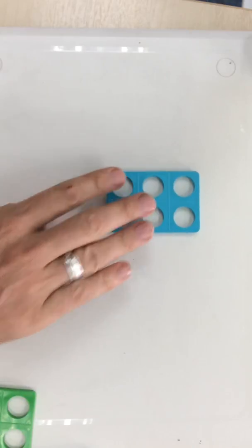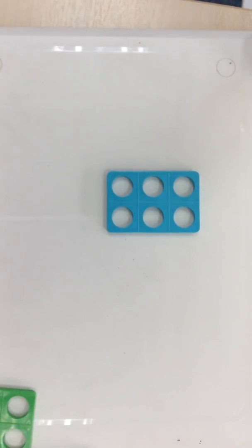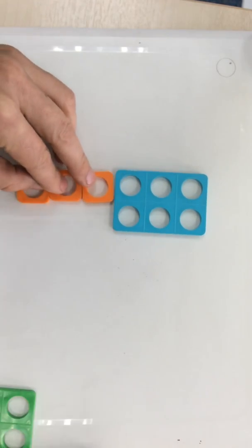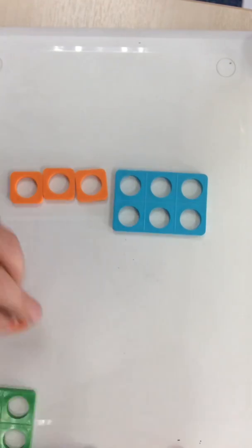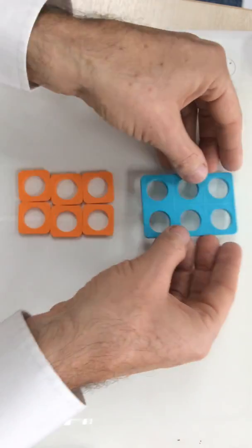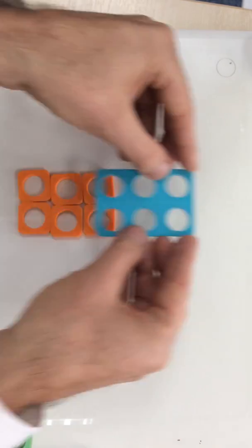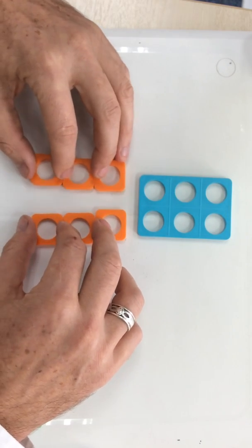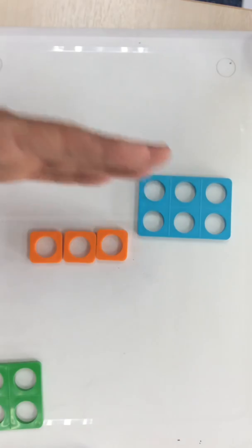Next we've got 6. I wonder how I can split that in half. Well, I've noticed that 6 is made up of two groups of 3. So if I halve 6, I get 3.